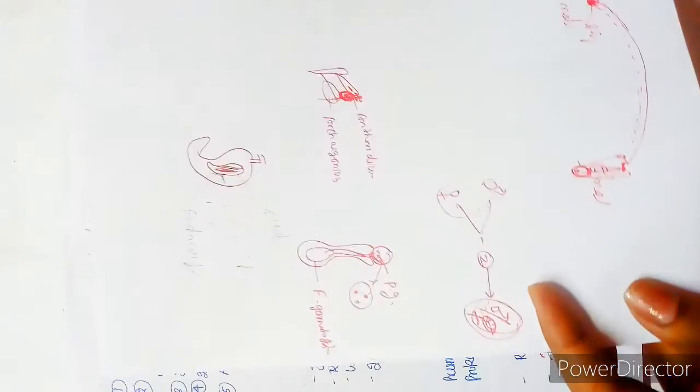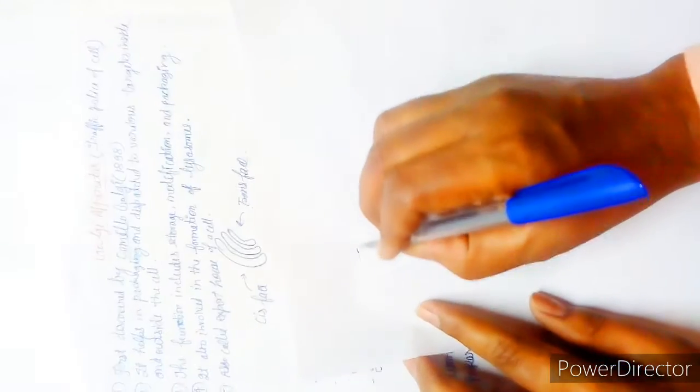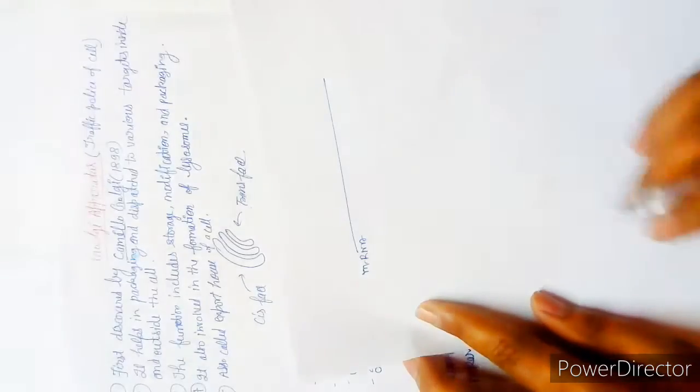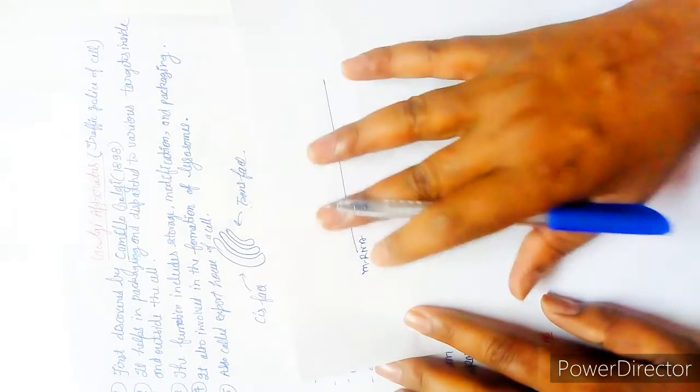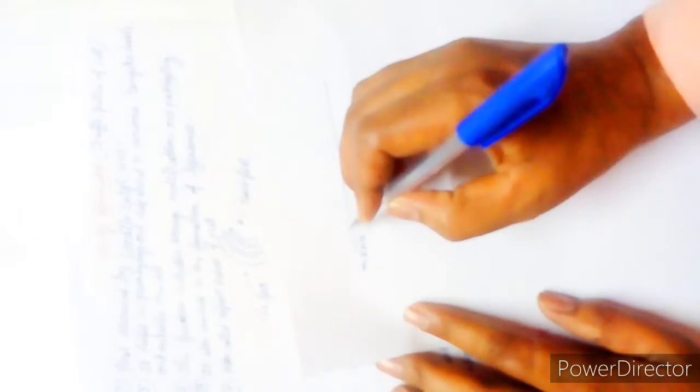Actually in class 9th it's not in such detail, but I'm trying to make you all understand. Suppose this is mRNA, means messenger RNA, on this strand the protein is synthesized.